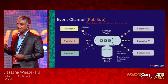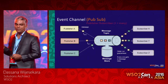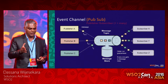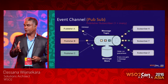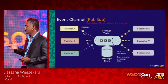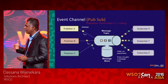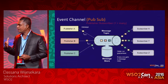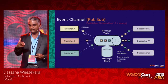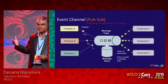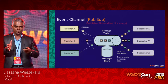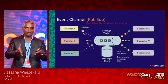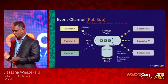We also see hybrid models, like durable topics — where even if subscribers are not active, when they become active the messages will reach them. So there are hybrid models between queues and topics.